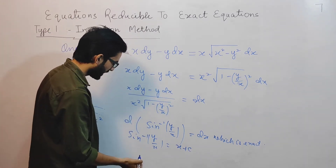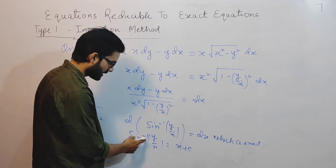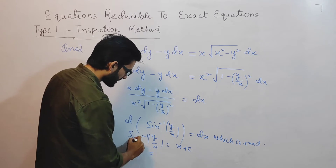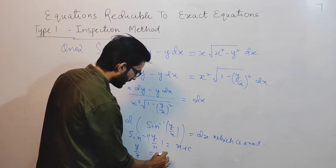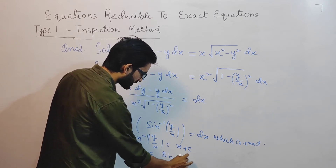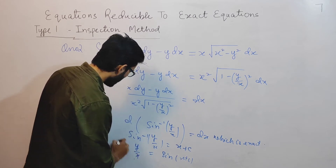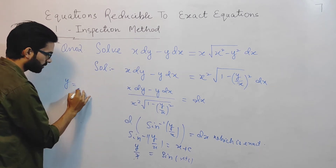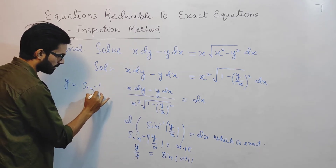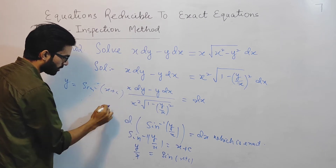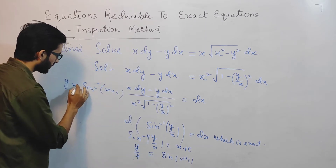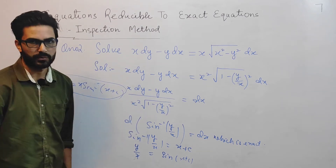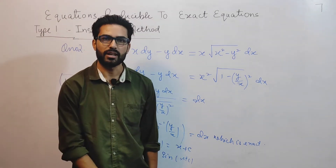Now what I can do: sin⁻¹(y/x) = x + c means y/x = sin(x + c), so applying sine to both sides, y = x·sin(x + c). This is the required solution. We will solve another question, and then we will close the inspection method.